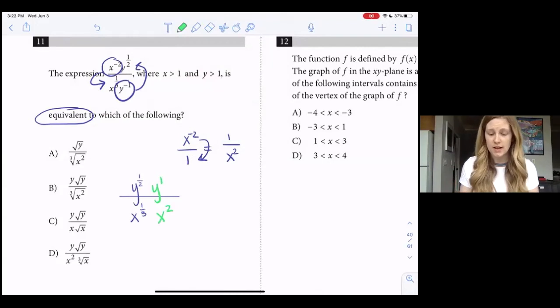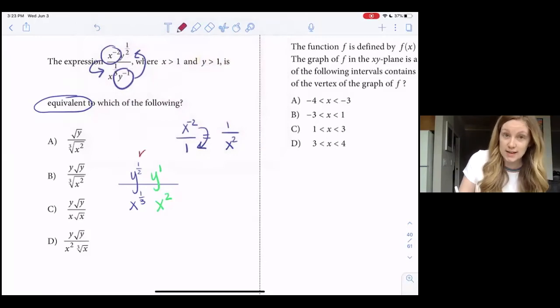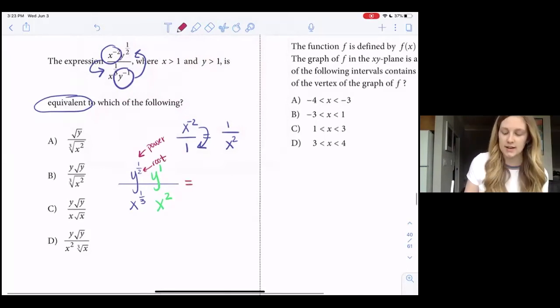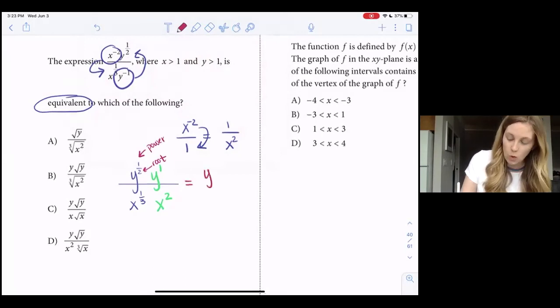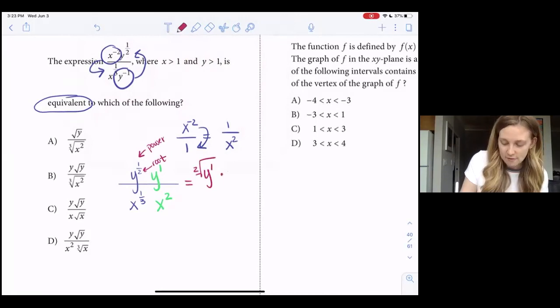But now I need to figure out how these fractional exponents are related to all of these roots in my answer choices. Well, in a fractional exponent, the top number is the power and the bottom number is the root. So I could rewrite y to the one half as y to the first in a square root. Now we normally don't write the two for square roots, it's just inferred, but I'm just going to write it right now. And then I still have my y to the first.